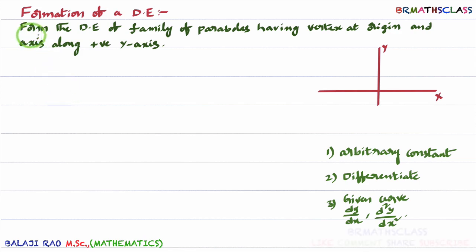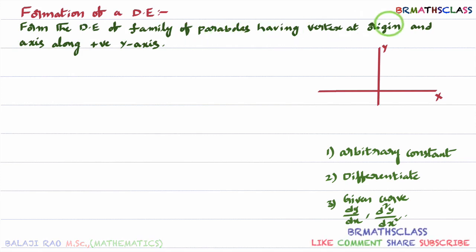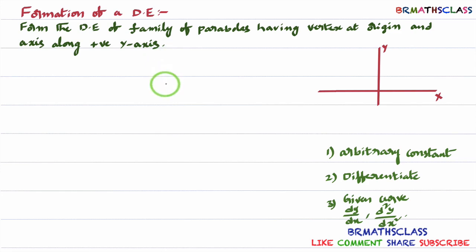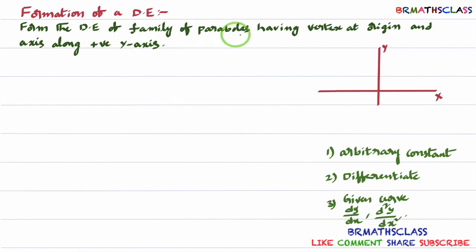You observe here — form the differential equation of family of parabolas having vertex at origin and axis along positive y-axis. In this question, they are not given the equation directly; the equation is in the form of a statement. The statement is: family of parabolas having vertex at origin.